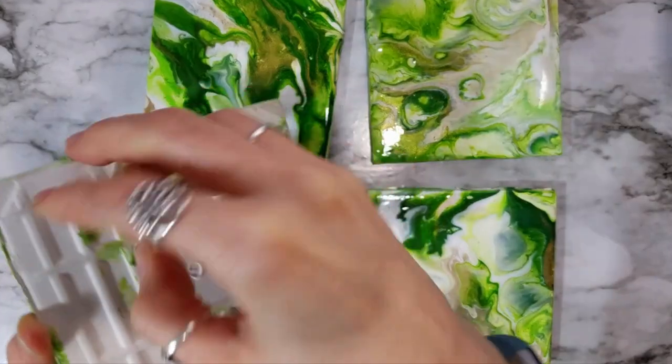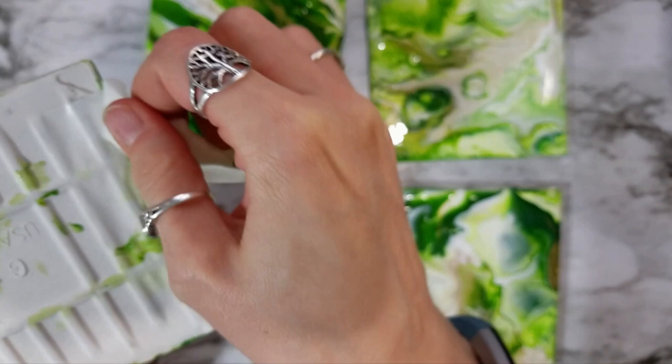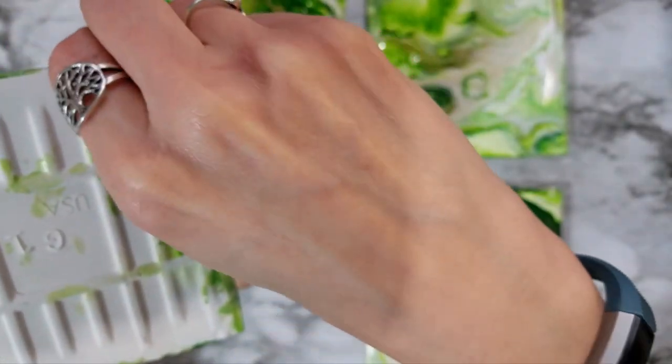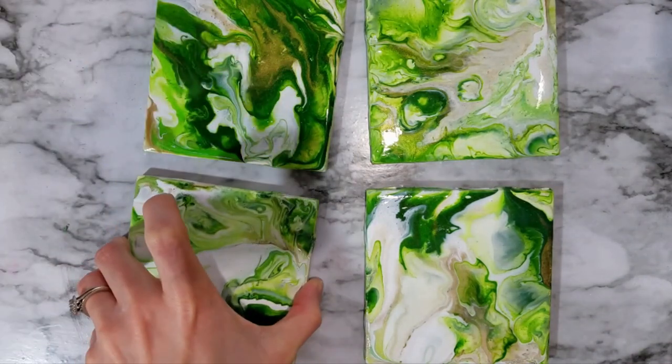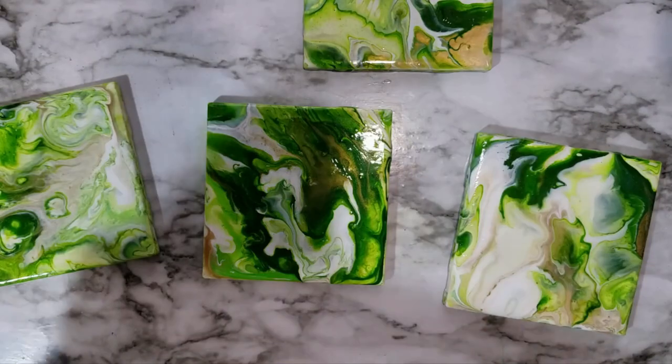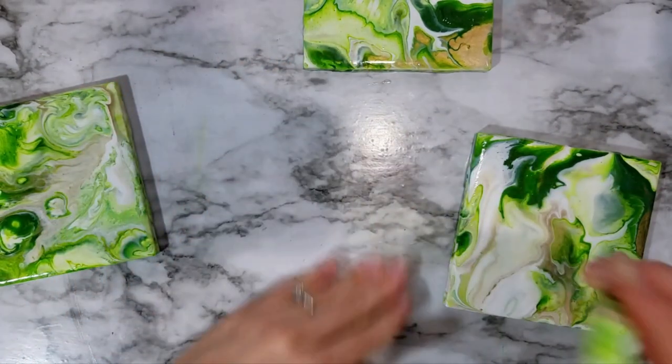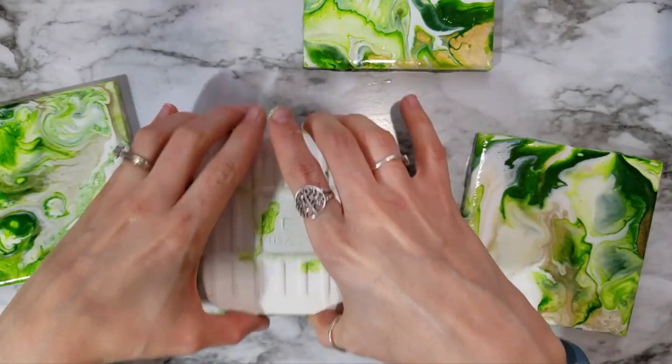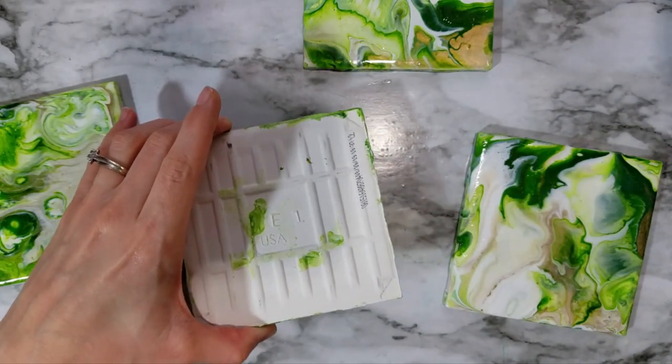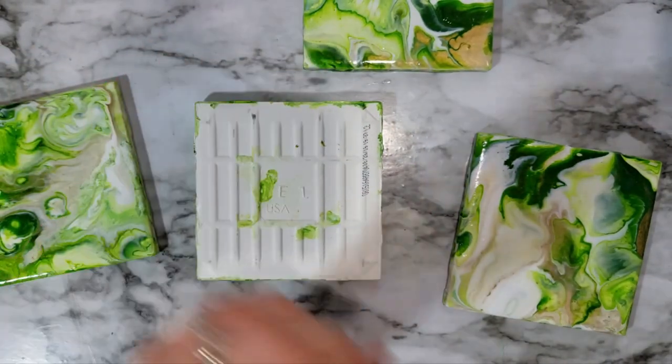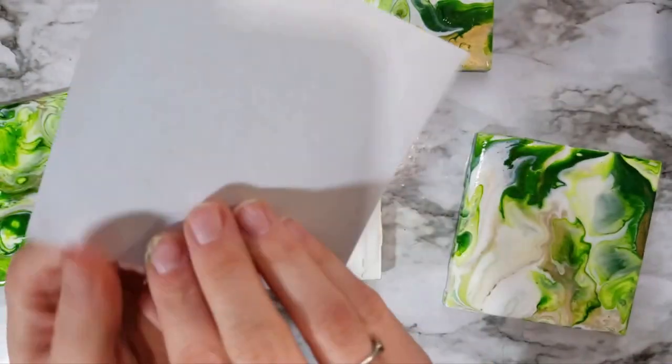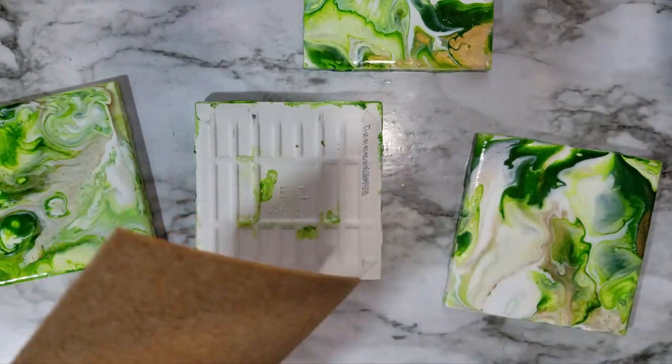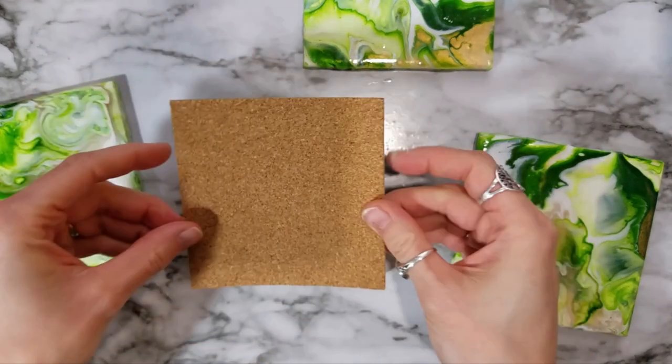So now I'm just gonna be removing the tape from all of these and putting the cork backing on them. I'm just gonna make sure that area is pretty clean. Put one of the cork backings on the bottom there and this is how they look. They're self-adhesive, you just pull this off.